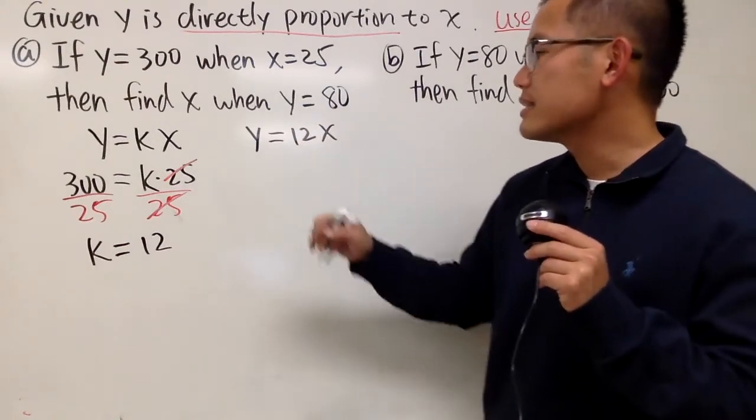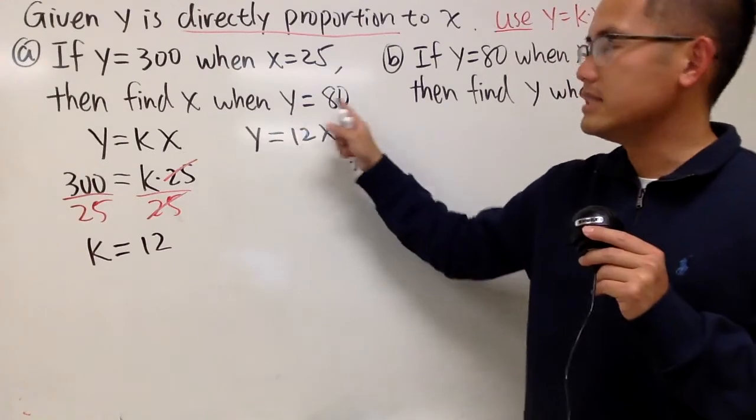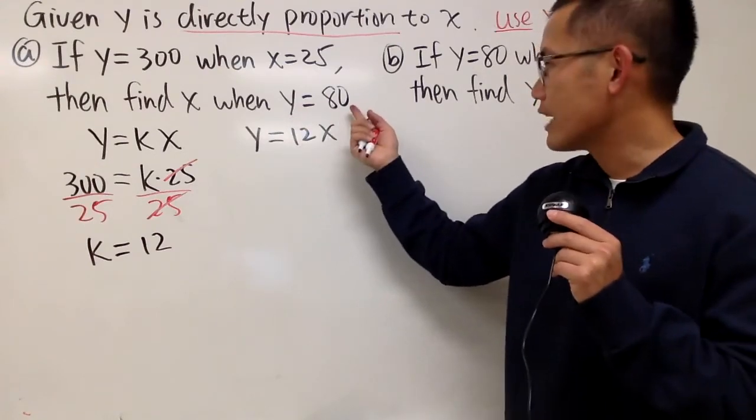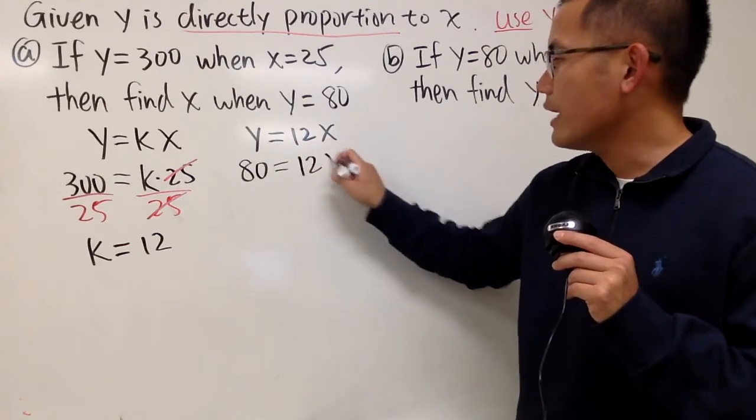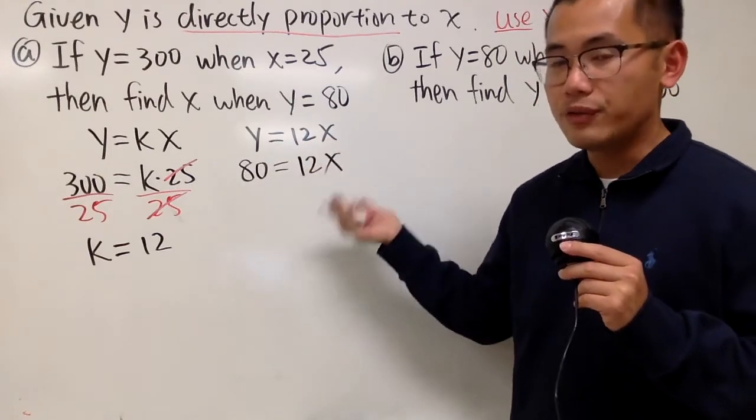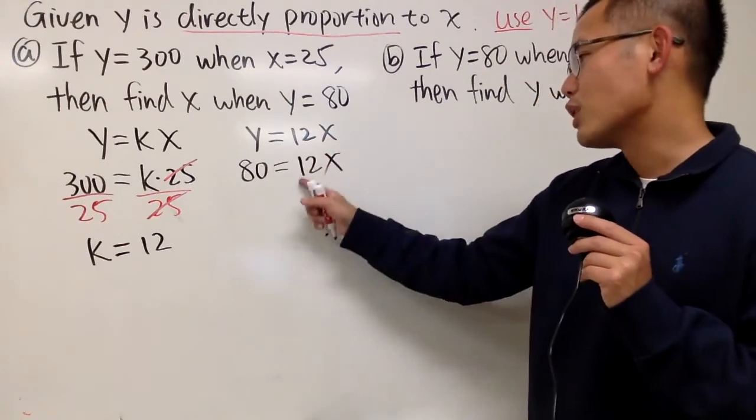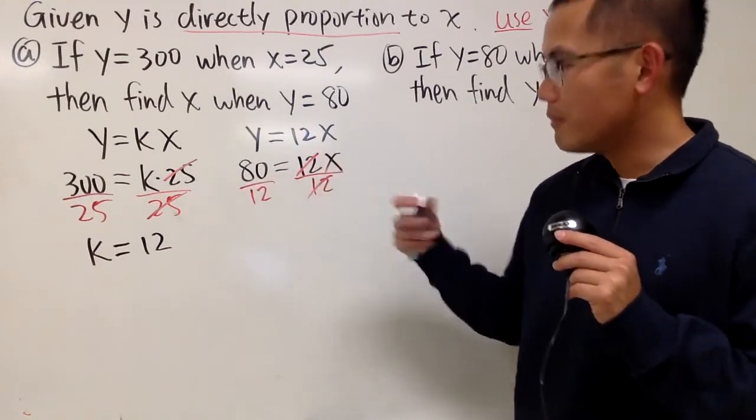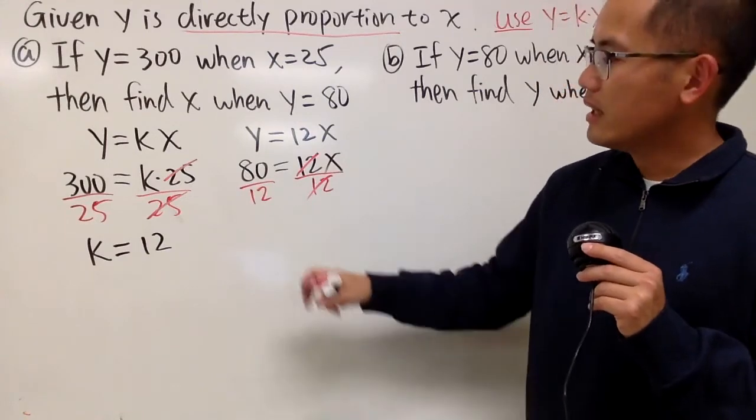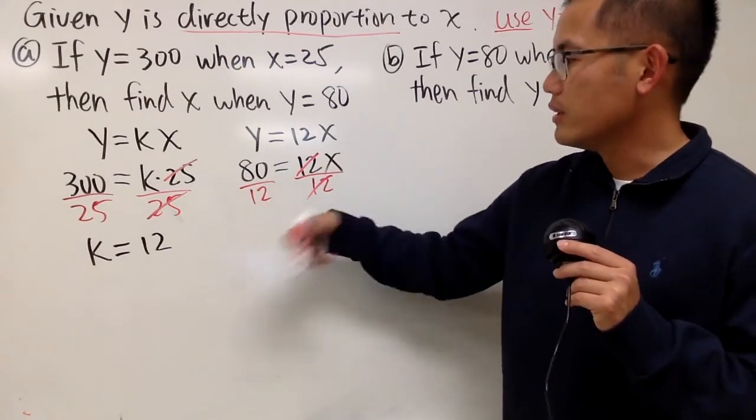And the question is asking us to solve for x when y is equal to 80. So I just have to put 80 right here, and that's equal to 12x. And in the end, how to figure out x is equal to what? This is 12 times x. So I can just go ahead and divide both sides by 12, so they cancel. Very nice. And we can reduce this fraction.